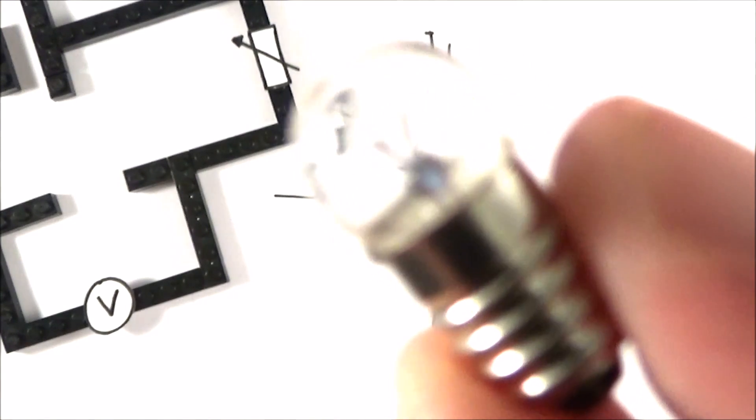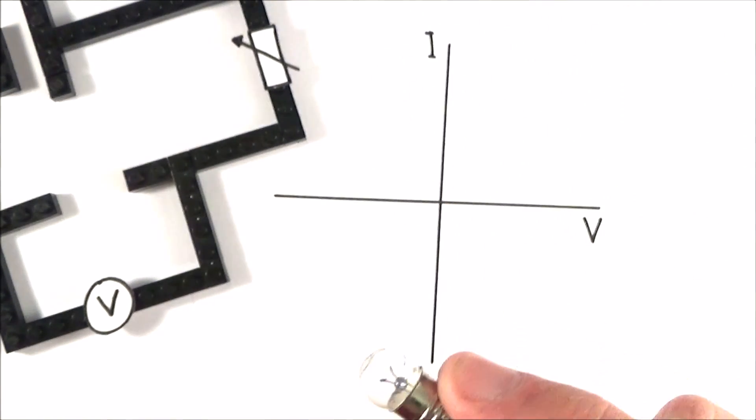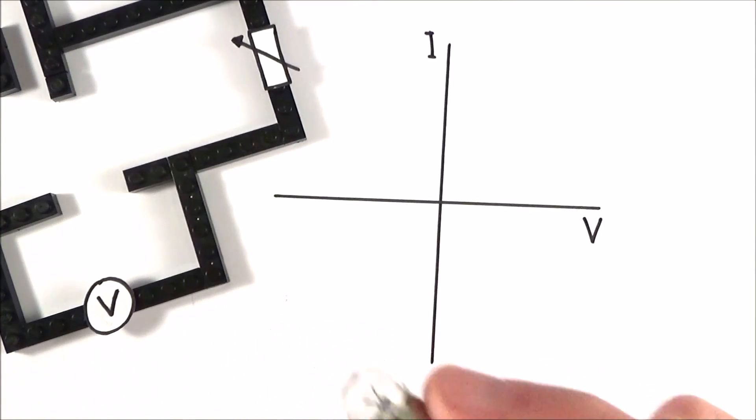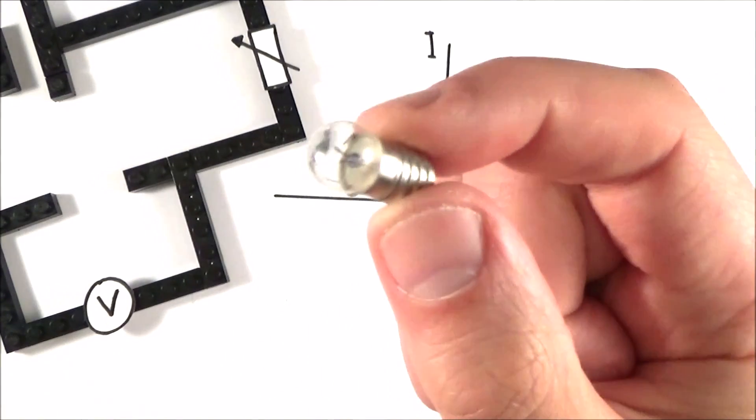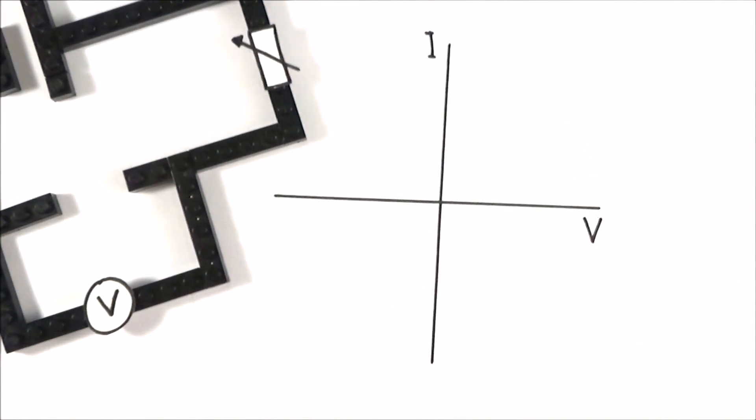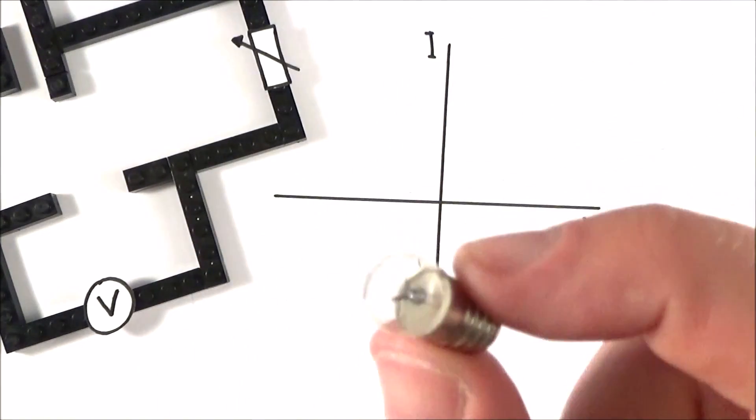The reason it's called a filament is if you look very closely you can just about see a little filament of tungsten. Tungsten is chosen because it has a very, very high melting point—over 3000 degrees. This means if we pass the current through it, the piece of wire inside gets very, very hot. The hotter something is, the more wavelengths of light it gives out.